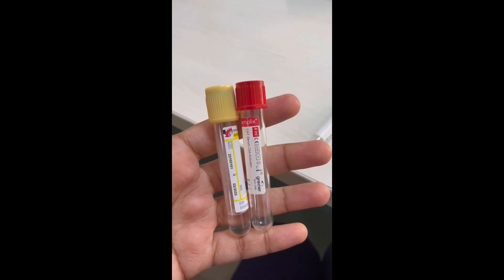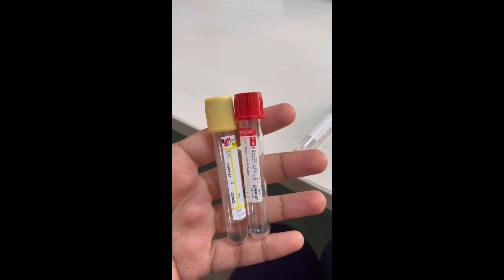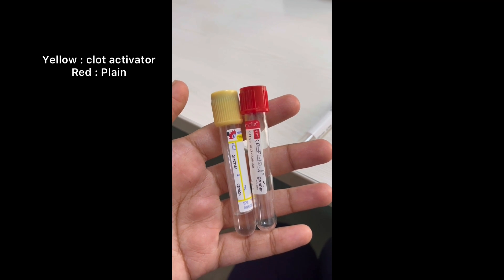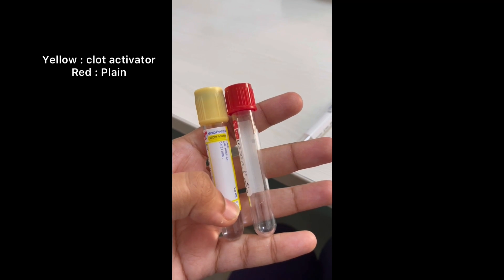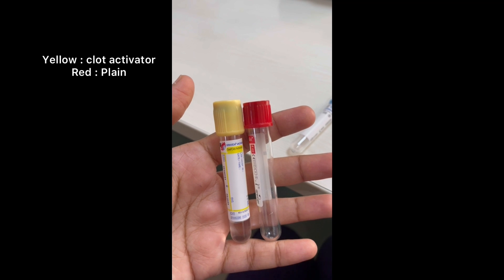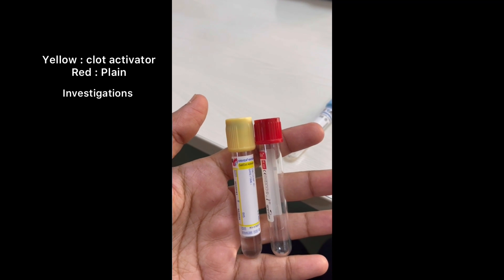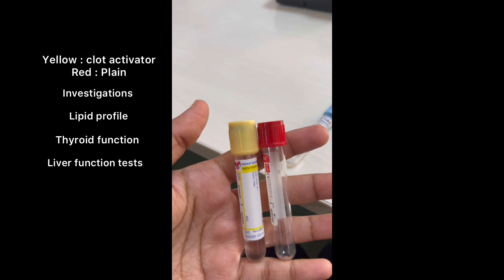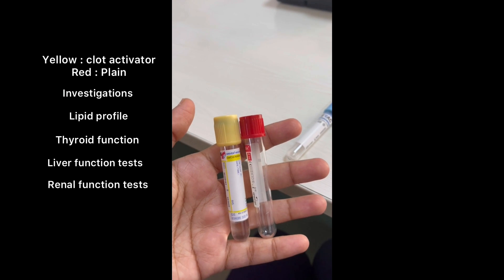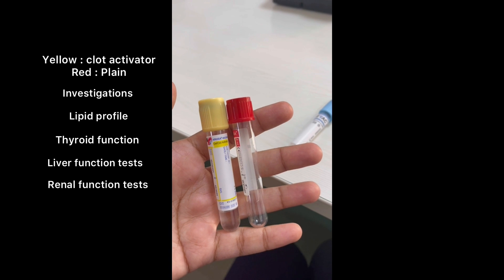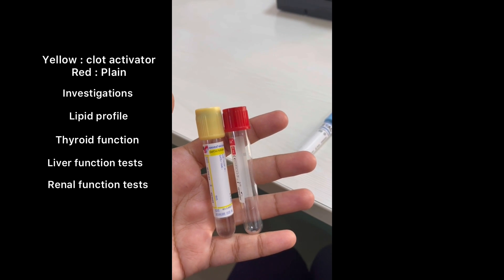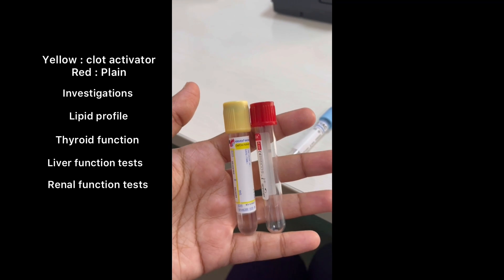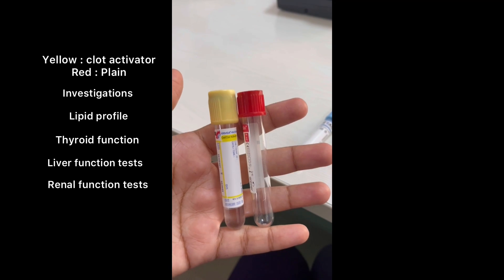Yellow and red vacutainers are used for biochemical investigations. The red one is a plain tube — it doesn't contain anything. The yellow one has a serum separator. When you need to look at biochemical investigations like lipid profile, thyroid function tests, liver function tests, or renal function tests, you need the serum — the formed elements of blood need to be separated from the serum, and from the serum you get all these investigations. For this we use the red and yellow color vacutainers.